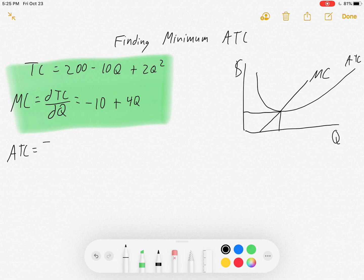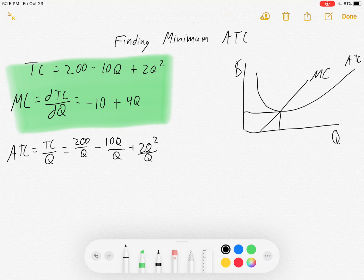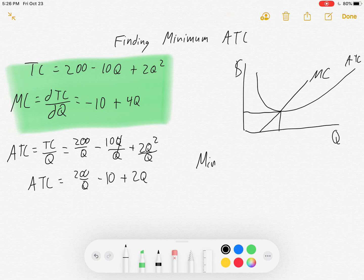Average total cost is equal to total cost over Q, equals 200 divided by Q minus 10Q divided by Q plus 2Q squared divided by Q. Which means your average total cost is equal to 200 over Q minus 10, because those Q's cancel out, and then plus 2Q. Alright, so if we want to find the minimum average total cost,